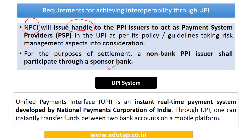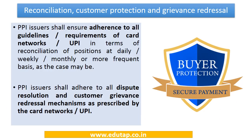EMV cards are chip-based payment cards with enhanced safety features designed to prevent fraudulent practices like card skimming or card cloning. For achieving interoperability through UPI, the National Payments Corporation of India (NPCI) will issue a separate handle to PPI issuers so they can act as payment system providers in UPI. For settlement, a non-bank PPI issuer shall participate through a sponsor bank.